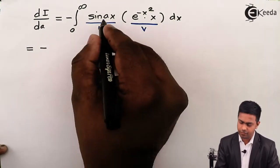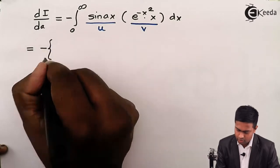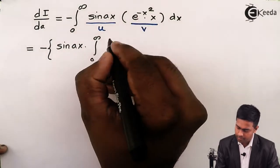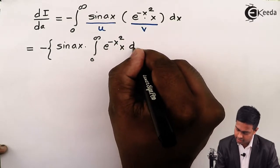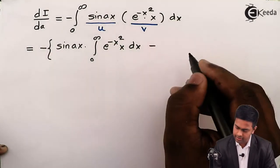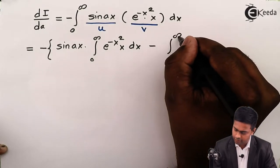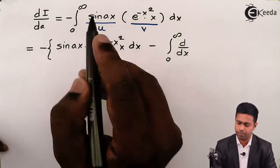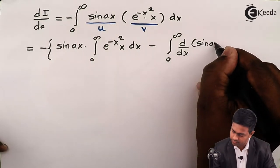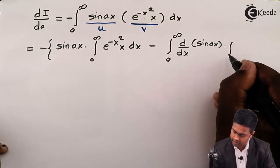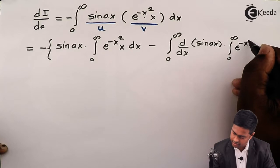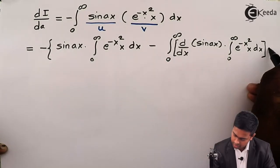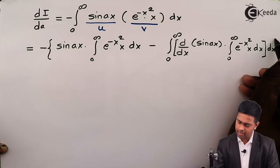By integration by parts, we write: u times integral of v — so first, sine(ax) as it is, then the integral of e^(-x²)·x dx, minus the integral from 0 to infinity of the derivative of u — that is d/dx of sine(ax) — multiplied by the integral of v, which is the integral of e^(-x²)·x dx, all times dx, ending the curly bracket.